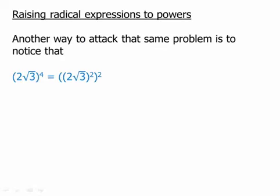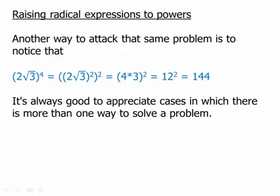Another way to attack that same problem is to notice that we could write that 4 as 2 times 2 and then bring only one of the factors of 2, bring that exponent inside the parenthesis. So we'll have a squared inside and a squared outside. The squared inside, that's easy. 2 squared is 4, √3 squared is 3. That's 4 times 3 or 12. Now we can apply the outside squaring and that gives us 144. That's another way to approach the same problem. It's always good to appreciate cases in which there is more than one way to solve a problem.